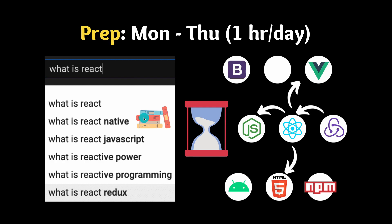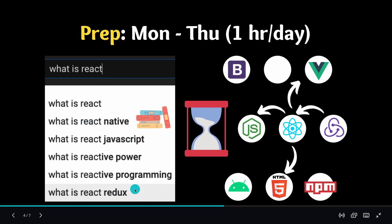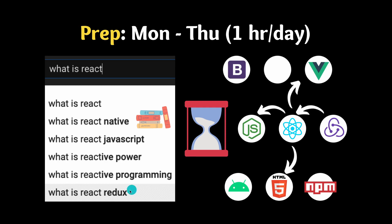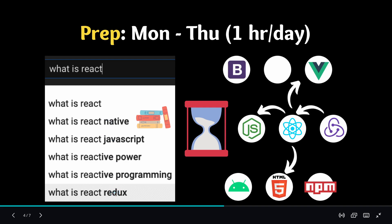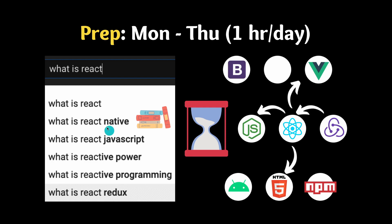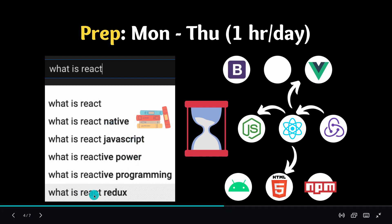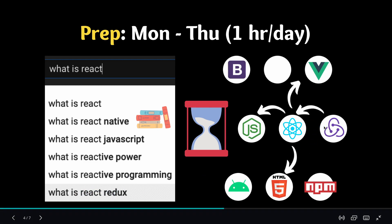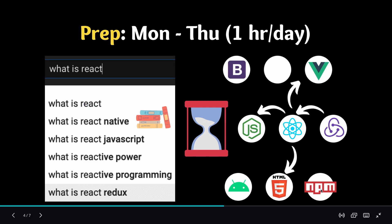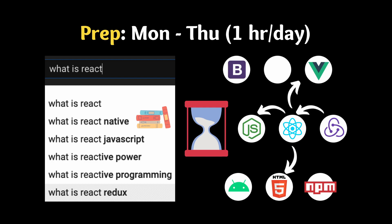Search YouTube and Google for the new technology. In my case I searched 'what is React' and saw suggestions like React Native, React Redux, and more. I watched a ton of these videos to get a general understanding: React Native is used to build mobile apps, React Redux is used to manage complex state, you can run React using npm. You want to build a one-sentence explanation for a lot of the technologies related to React.